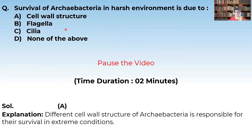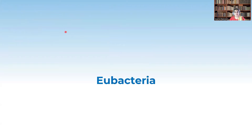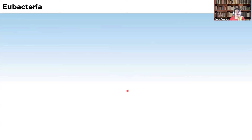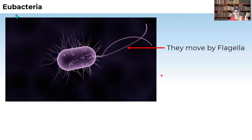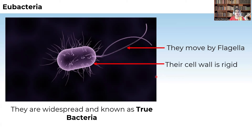Now let us discuss eubacteria. Remember — wherever 'eu' is used it means 'true,' like eukaryotes meaning true nucleus is present. Likewise, eubacteria are the true bacteria. When they are motile, they move with the help of flagella, and their cell wall is also rigid. They are widespread and are known as true bacteria.